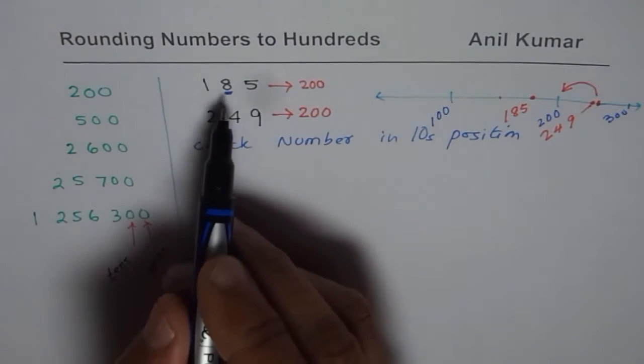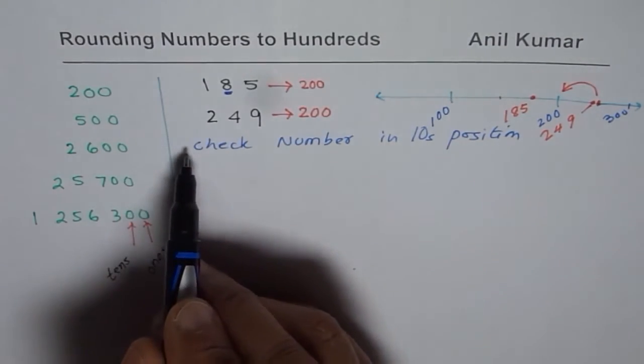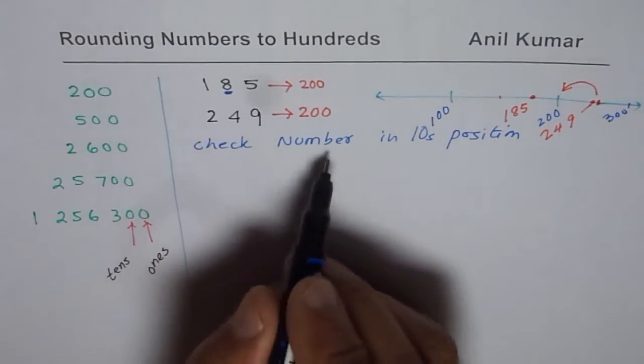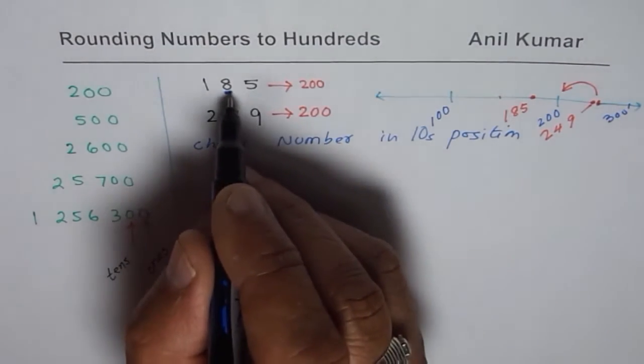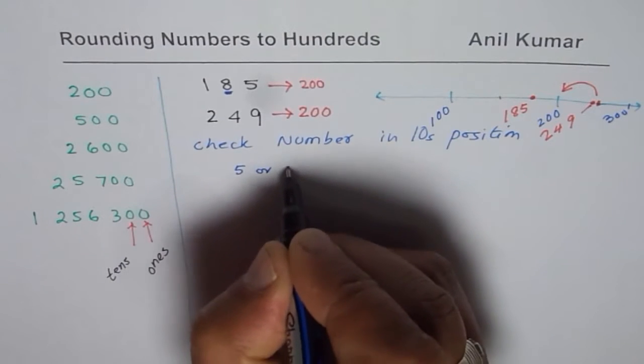the number in tens position is 8. 80 is closer to 100. So one more. So if you check number in tens position, and if the number is 5 or more,